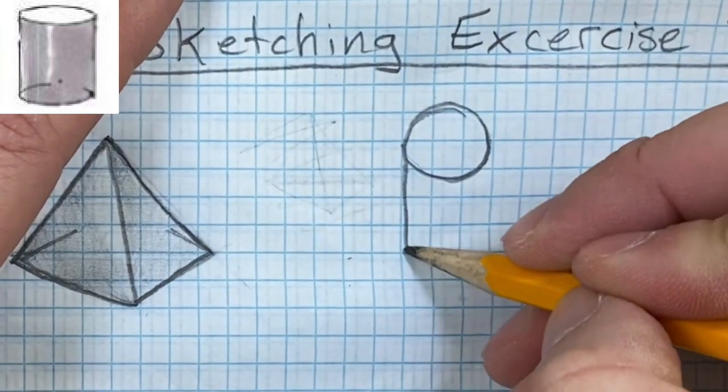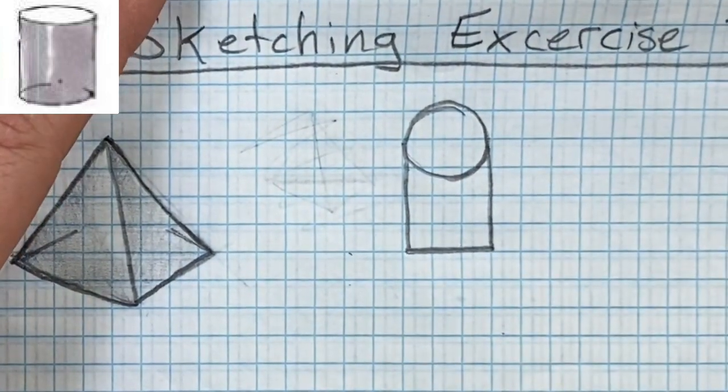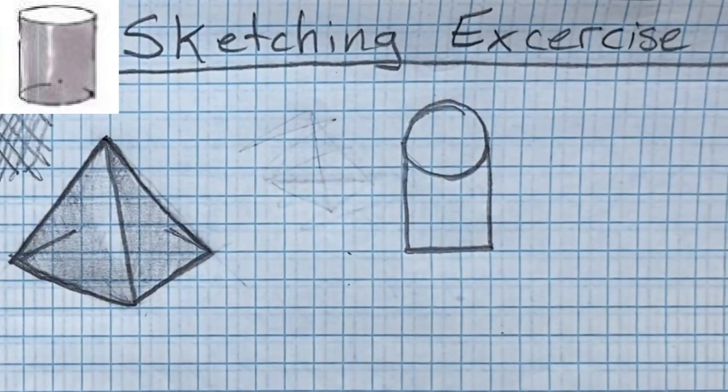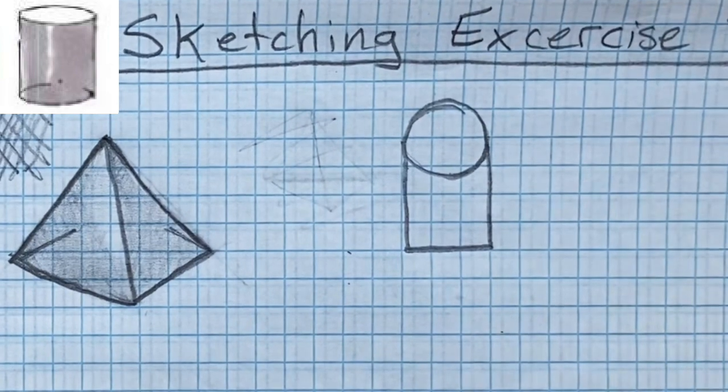They'll draw a circle and then they'll go down and then they'll make it flat on the bottom. And if you look at this cylinder, it doesn't look anything like that. It's not flat on the bottom and it's not a circle at the top.